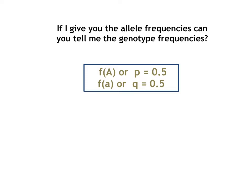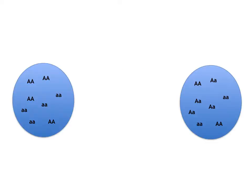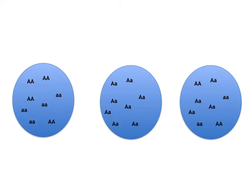Now the question becomes: if you are given allele frequencies, can you automatically know the genotypic frequencies? Just like before, when we saw that genotypic frequencies allow you to calculate allele frequencies — can the reverse happen? The answer is no. We can have three different populations, all with the same allele frequencies of 50% P and 50% Q, but with very different genotypic frequencies.